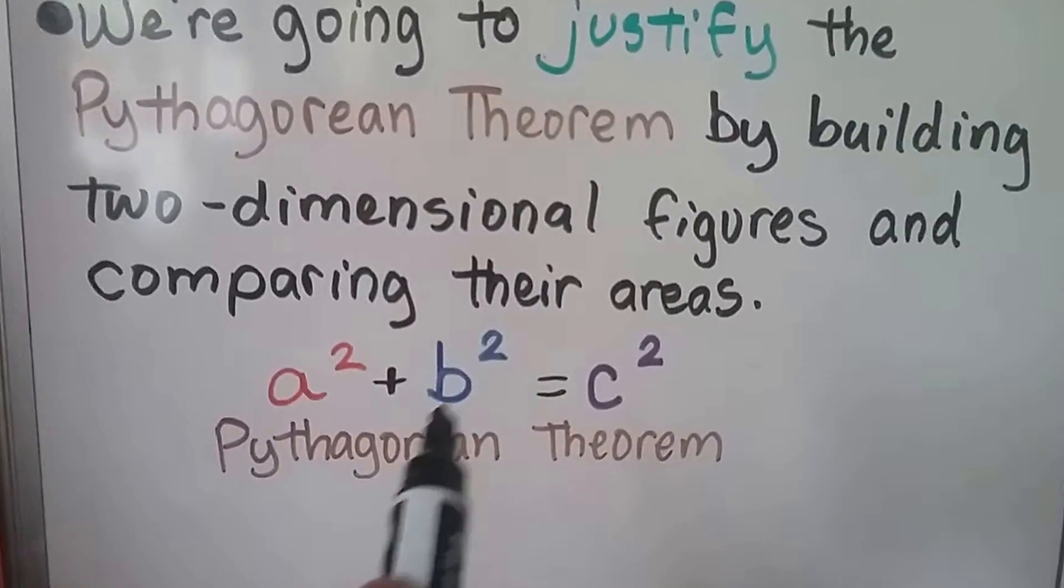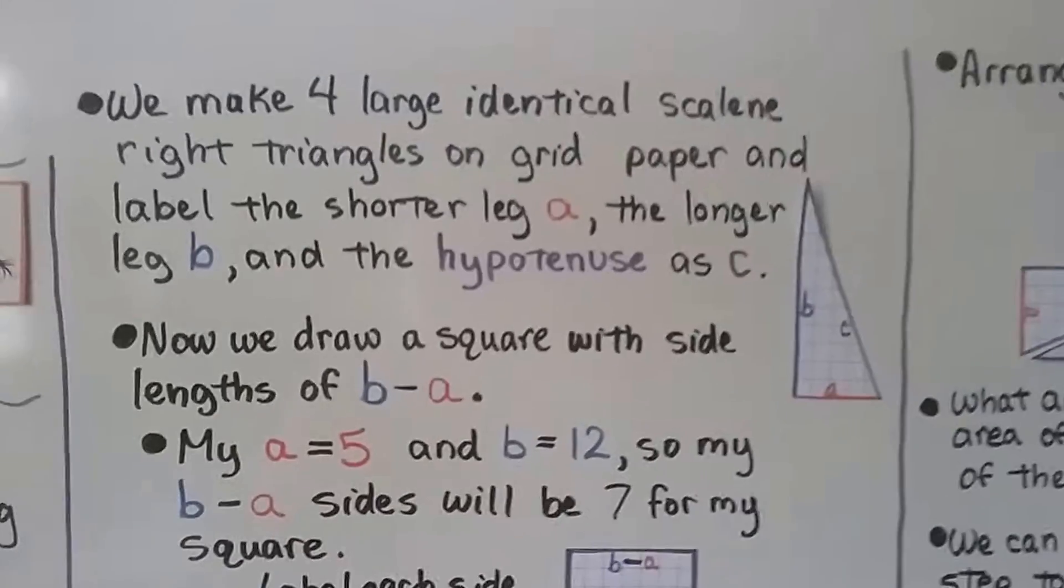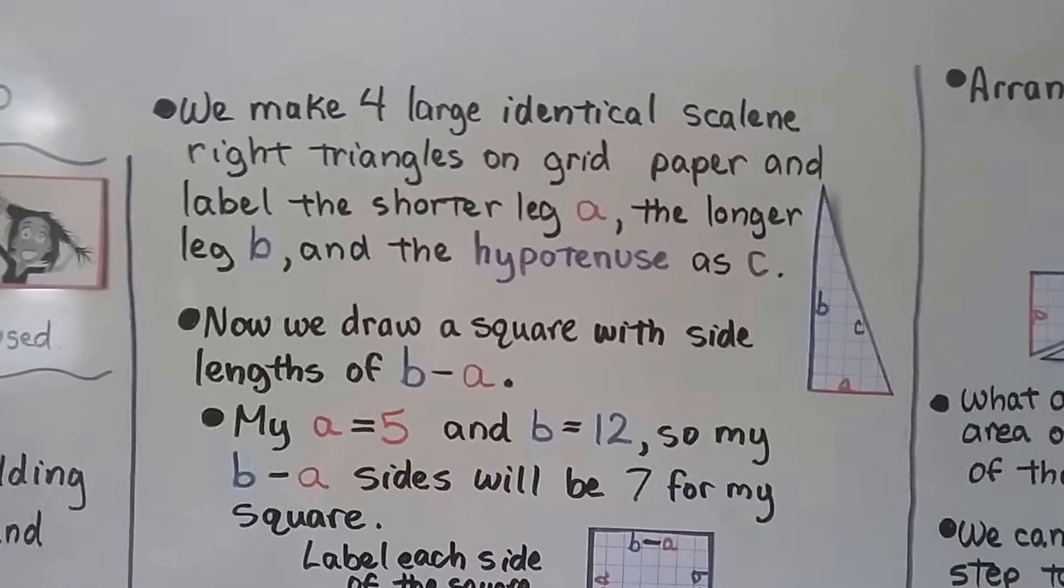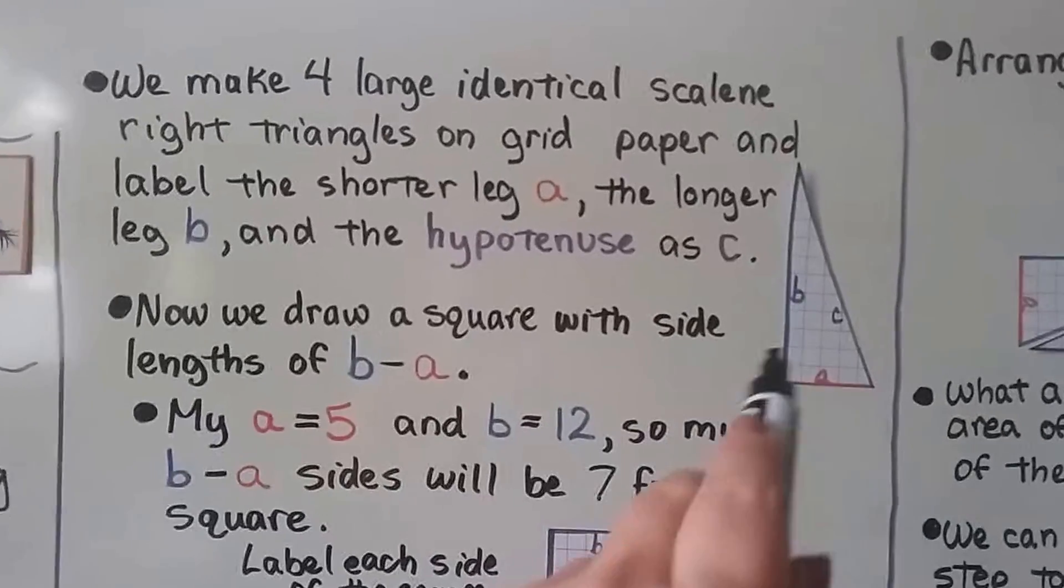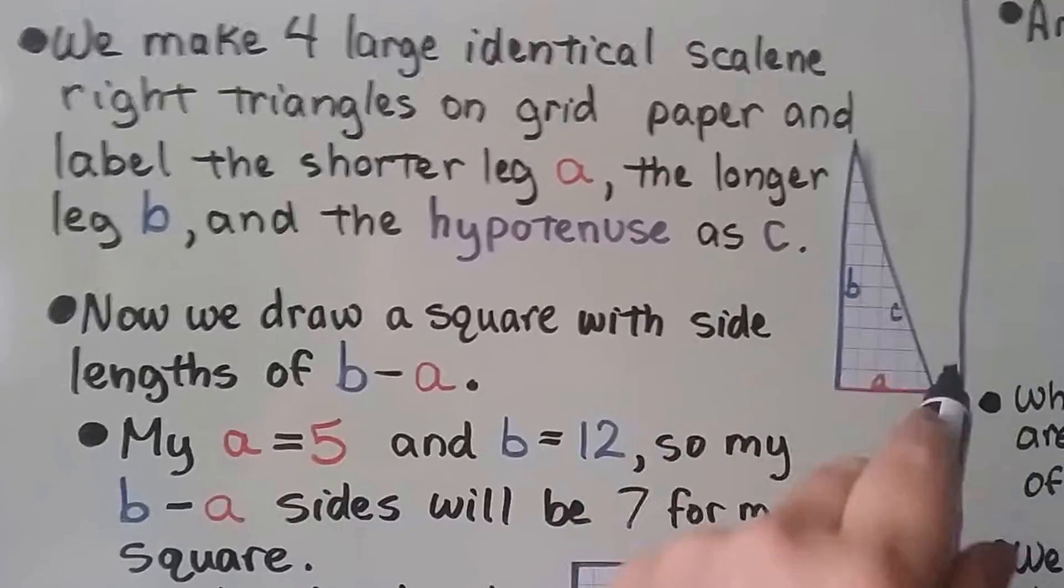Just as a reminder, a squared plus b squared equals c squared is the Pythagorean Theorem for right triangles. So the first thing we're going to do is make four large identical scalene right triangles on grid paper and label the shorter leg a and the longer one b and the hypotenuse c.